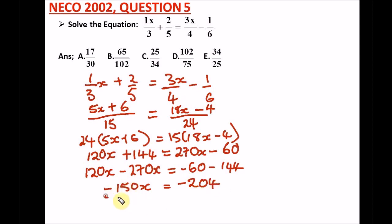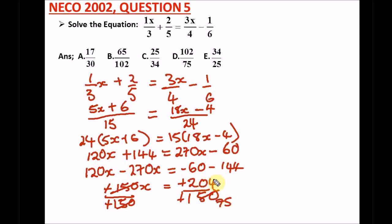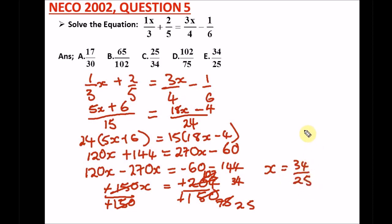We divide both sides by minus 150. Negative divided by negative cancels out. Simplifying: two goes into both 150 and 204 - so we get 75 and 102. Then three goes into both: 25 and 34. So x is equal to 34 over 25. The correct answer matches option E.